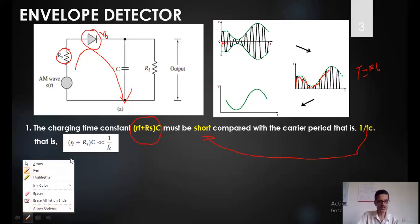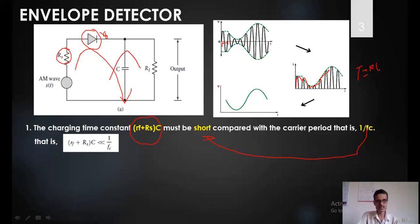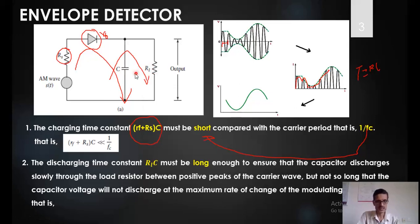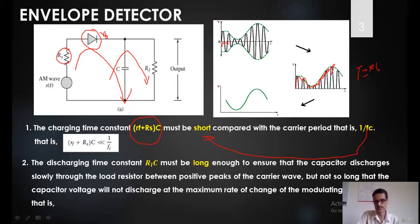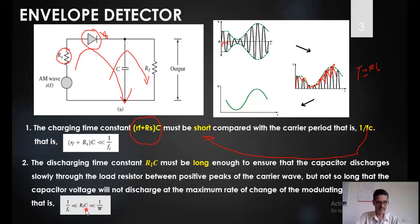Now, what about the discharging time constant? The discharging happens through this particular path, and the discharging time constant is RL × C. The capacitor should discharge very slowly — it should charge fast but discharge slowly. When it charges fast and discharges slowly, it holds the charge; when it gets the peak of the next cycle, it charges quickly again and holds the charge for a long time. The condition is that RL × C should be very much greater than 1/FC, but it should be less than 1/W, where W is the frequency of the message signal or the message bandwidth.